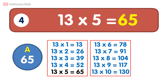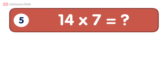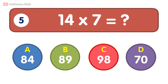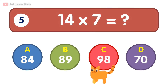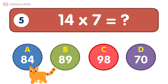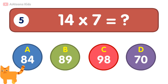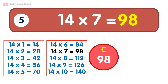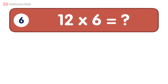65. 13 times 5 is 65. 14 times 7 is equal to 98. 14 times 7 is 98. 12 times 6 is equal to...